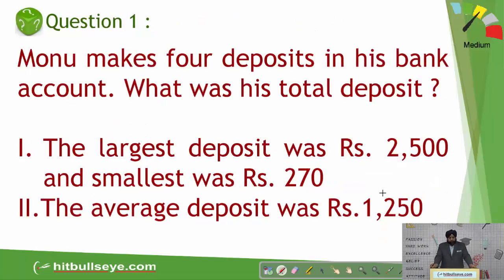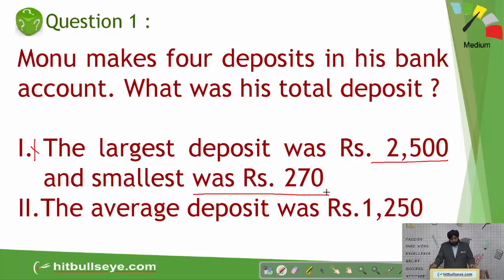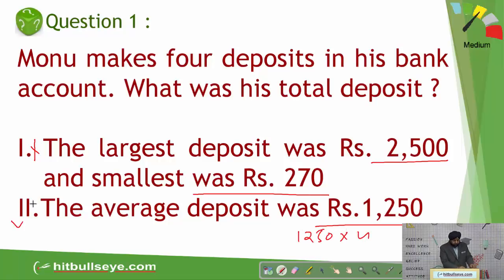Here comes the first question. One who makes four deposits in his bank account — what was his total deposit? The first statement alone is not sufficient because the largest and smallest deposit is given, but we cannot find the remaining two deposits with this information. For statement two, the average deposit was 1250, so total comes out to be 1250 into 4. So the second statement alone is sufficient, and hence that is the answer.